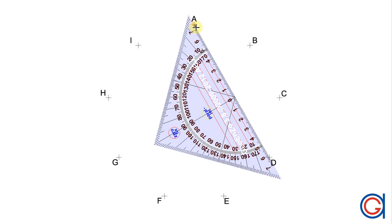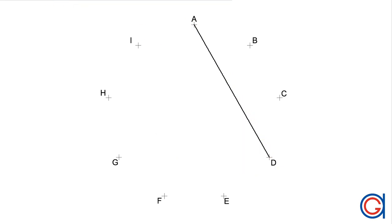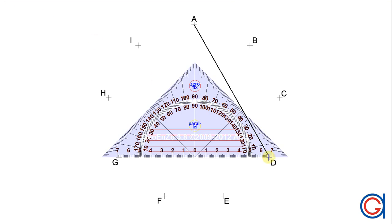So the first thing we join vertex A to vertex D as can be seen here skipping vertices B and C. Now we will join vertex D to vertex G skipping vertices E and F.